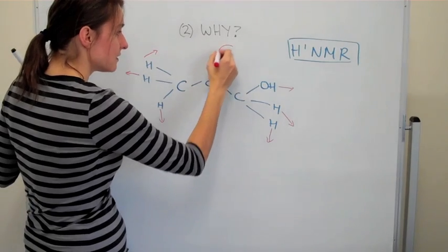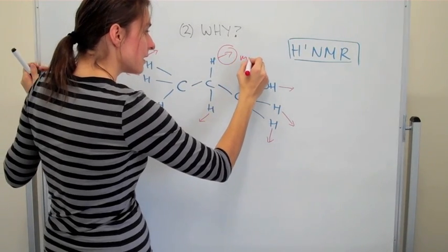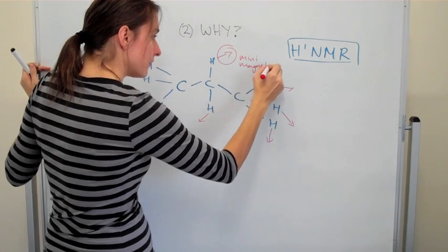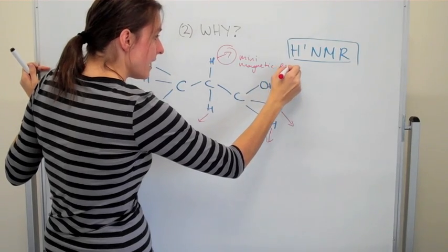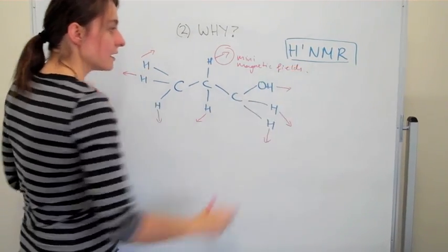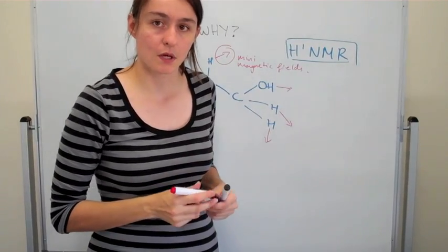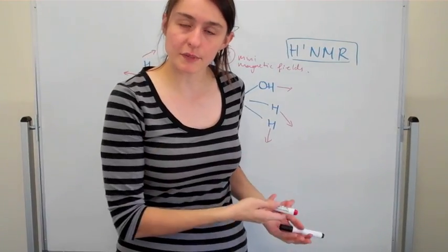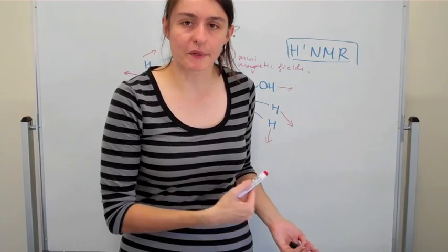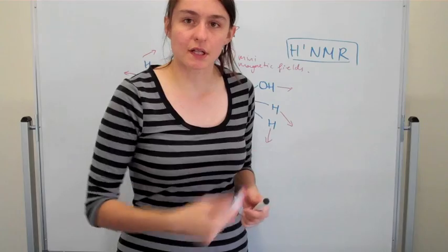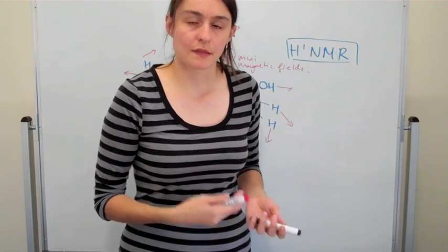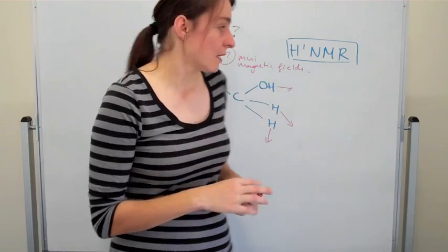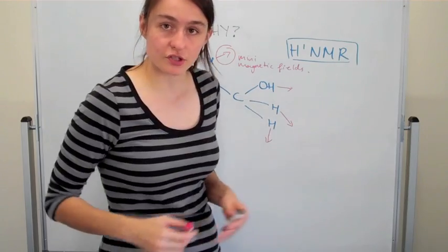So these are called mini magnetic fields. And they are caused by nuclear spin of that particular atom. So this happens in a natural molecule, it does not have to be induced, it simply happens because those particular atoms will spin. They will do so naturally, and they do so in every single molecule that contains hydrogens.